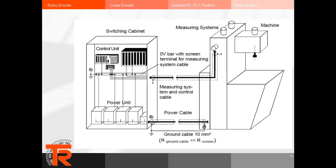We're looking at a basic diagram depicting grounding and shielding techniques as recommended by TR Electronic. You see the zero-volt bar with the screen terminal for measuring cable. Manufacturers such as Phoenix Contact and Wago make screen terminals, which are recommended and should be dedicated for sensitive measuring equipment. The shield is tied on the machine side as close to the measuring system as possible, and on the other side attached to the zero-volt bar. The resistance of the ground cable should be far less than the resistance of the cable screen, to make a more attractive path for electrical disturbances — we don't want that noise to travel across the encoder screen.